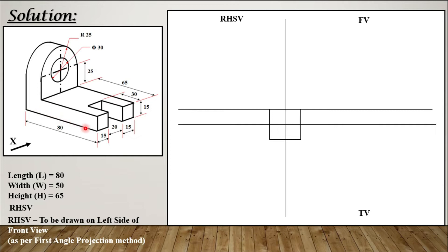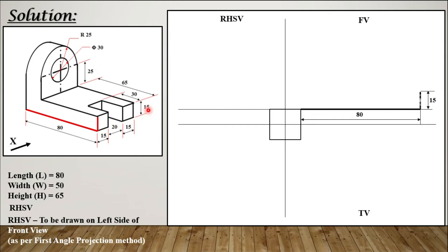I am using different colors to identify which line I am drawing in each view. Starting with the front view: I draw a line of 80 mm for the base. Then it rises up by 15 mm, so I take 15 mm and draw that. Then from the top surface, the distance to the center is 25 mm — the top surface is already 15 mm above the base, so we take an additional 25 mm upward.